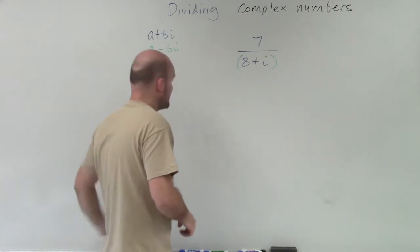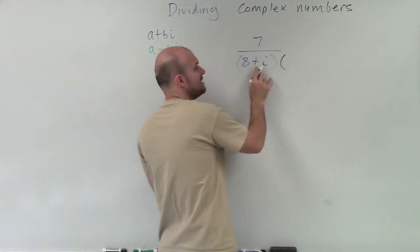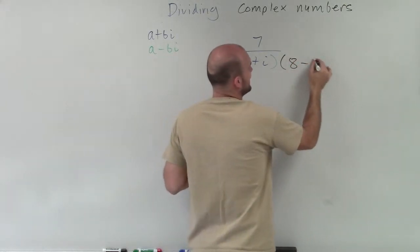So let's multiply by the conjugate and see what happens. So if I multiply it by the conjugate in this form, since it's a plus i, my conjugate will be a minus i.